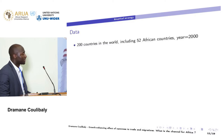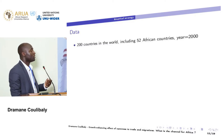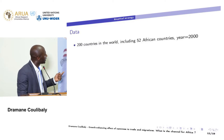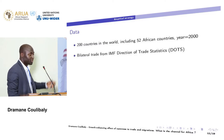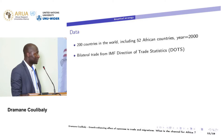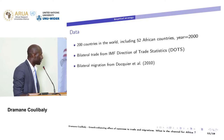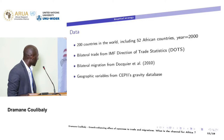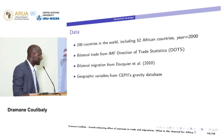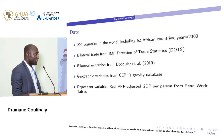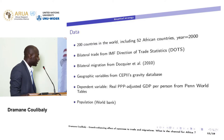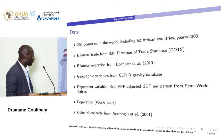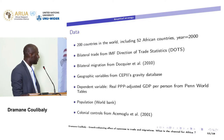Concerning data, we use data on 200 countries in the world, including 52 African countries, for the year 2000. Bilateral trade data are taken from the IMF Direction of Trade Statistics. Data on bilateral migration are taken from Docquier and Marfouk. Geographic variables are from the CEPII gravity database. Our dependent variable is the real purchasing power parity-adjusted GDP per capita from the Penn World Tables. Population data is from the World Bank, and colonial controls are taken from Spolaore and Wacziarg.